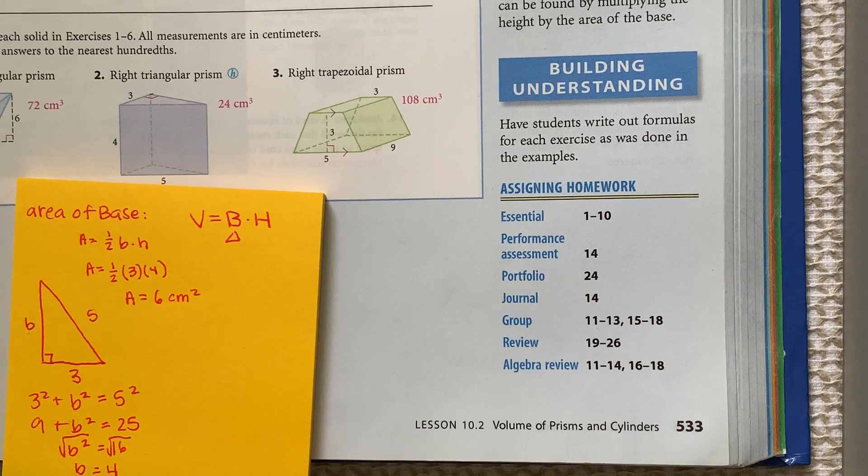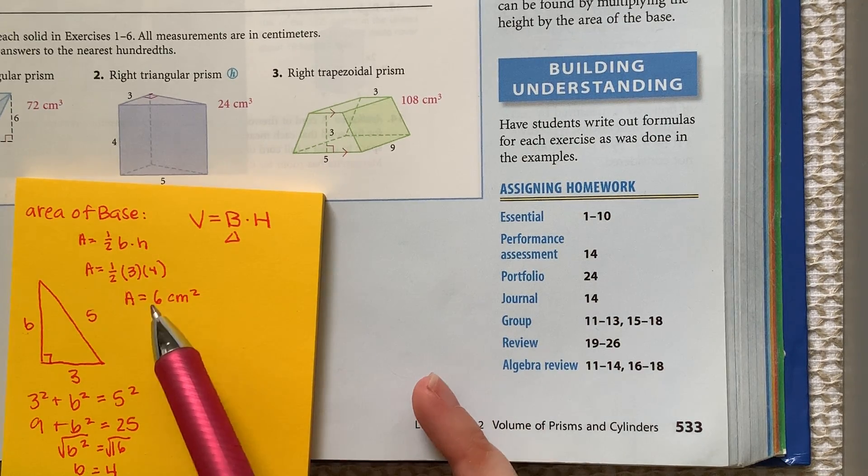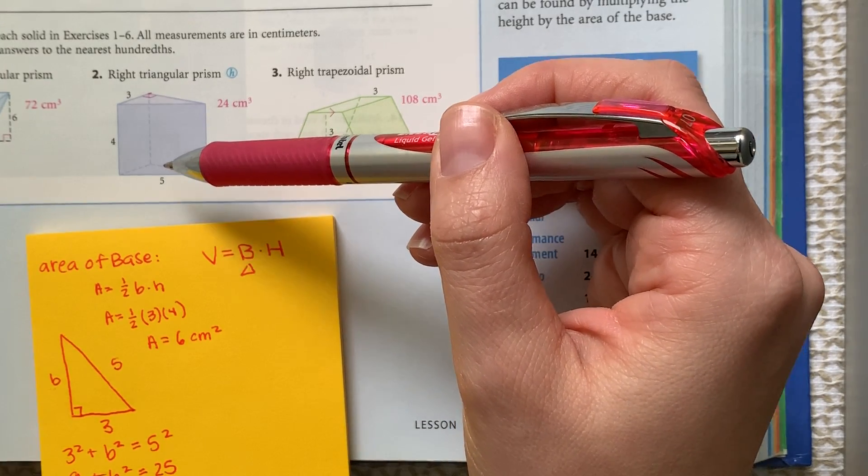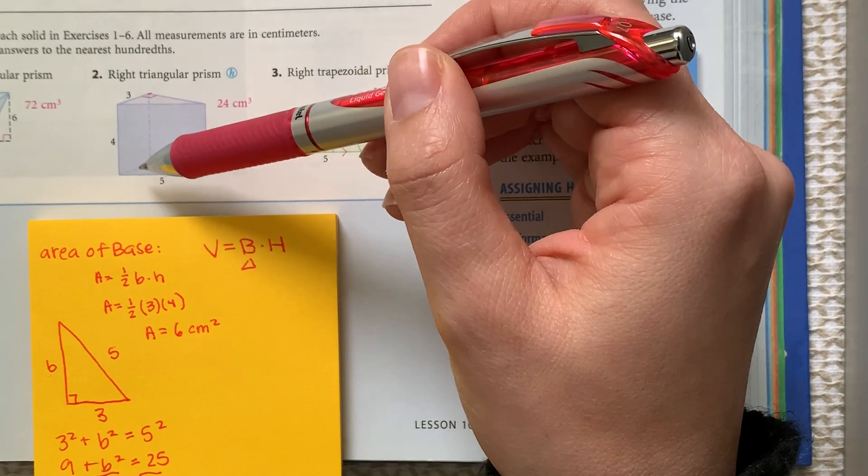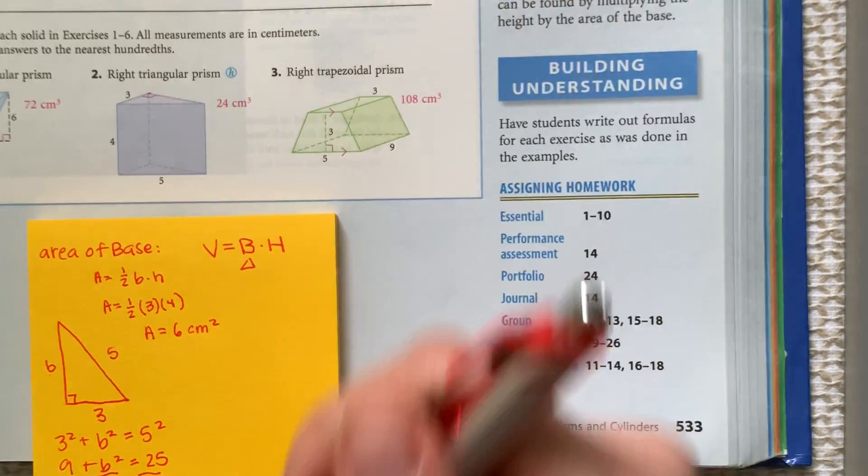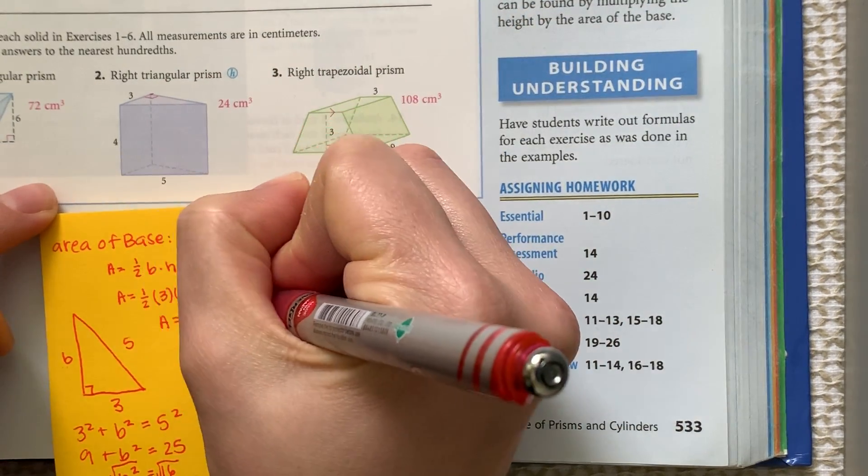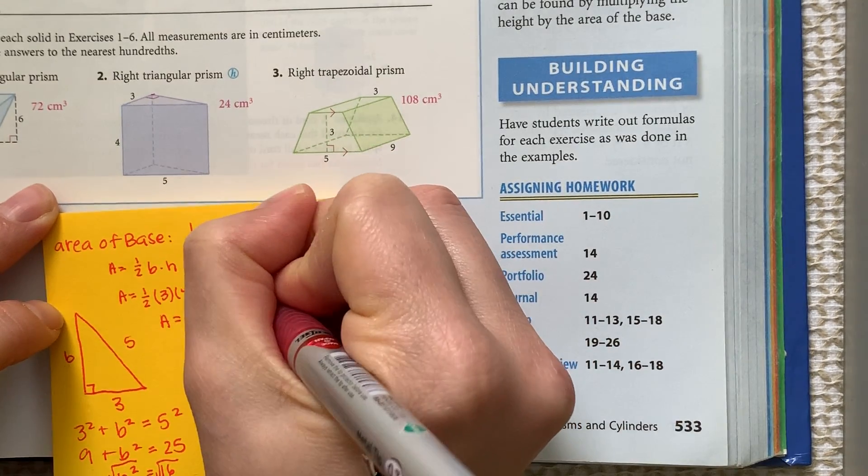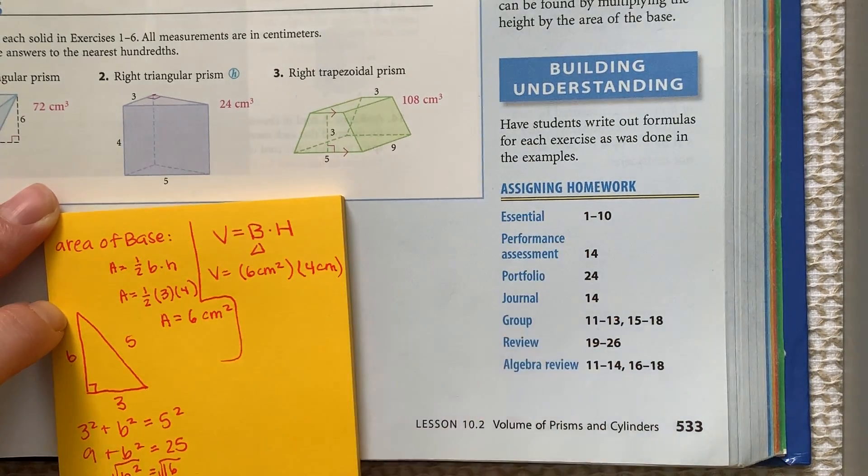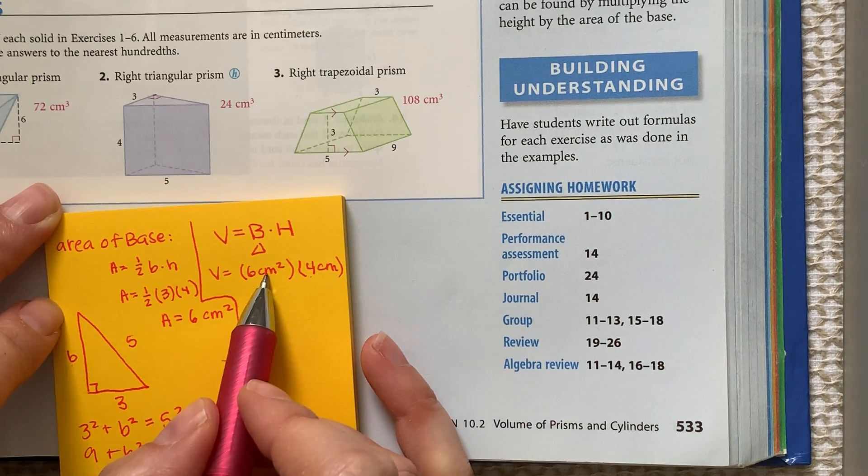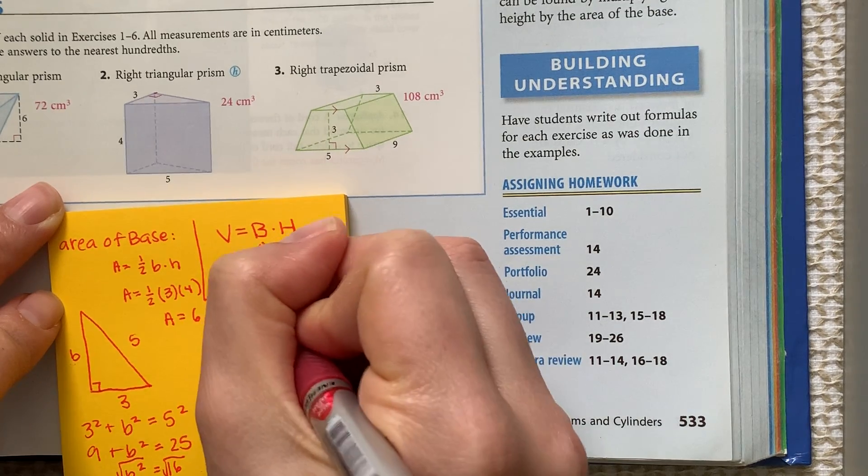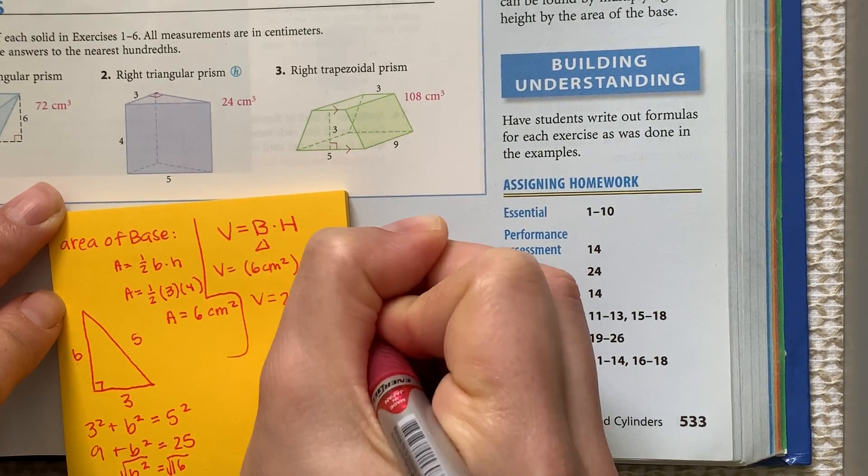And then when we go to find the volume, we're going to do the area of the base times the height of the prism. So we have the area of the triangular base is 6 centimeters squared. And if you take a look here, it's like we're stacking these triangles to create the volume and we're going 4 units high. And so the volume is going to be 6 centimeters squared times the height, which is 4 centimeters. And 6 times 4 is 24 centimeters squared times centimeters, we add the exponents. So 2 plus 1 is 3. So our volume is equal to 24 centimeters cubed.